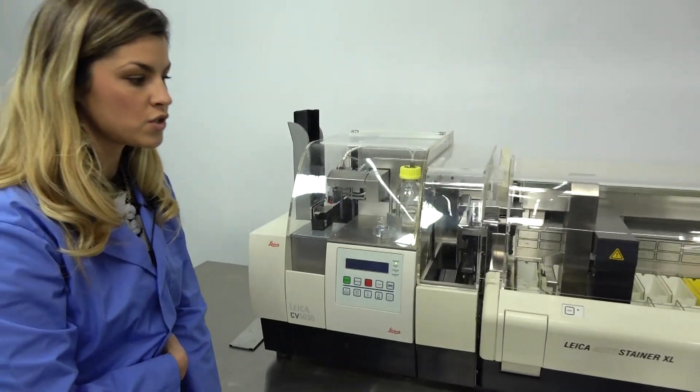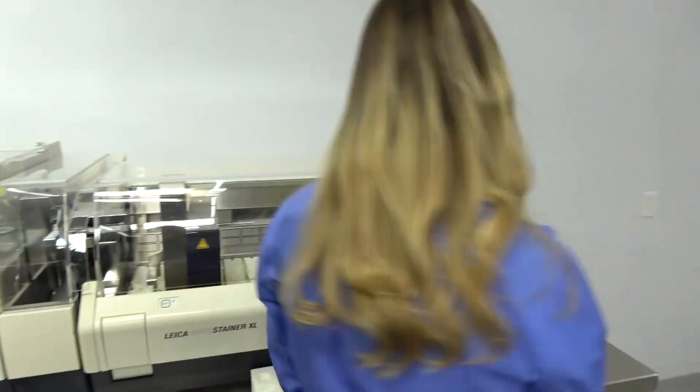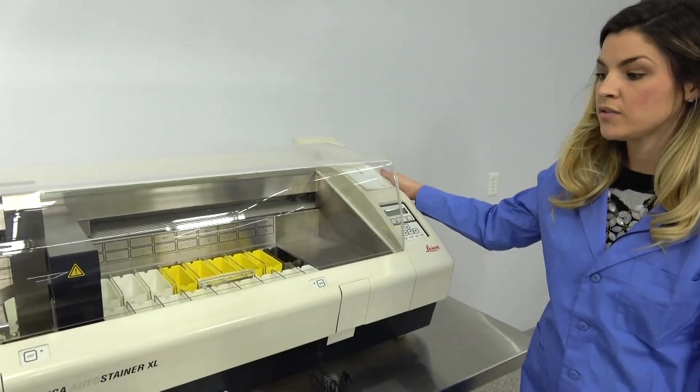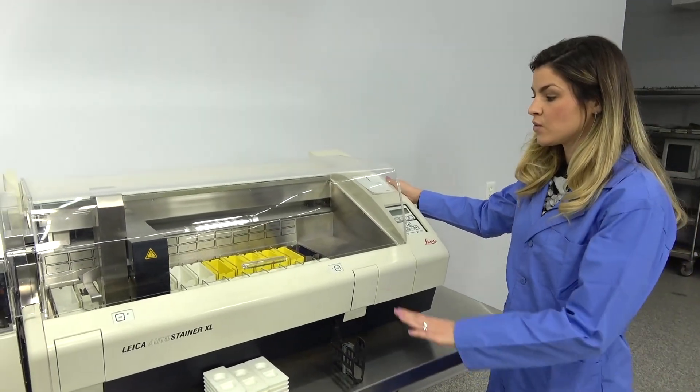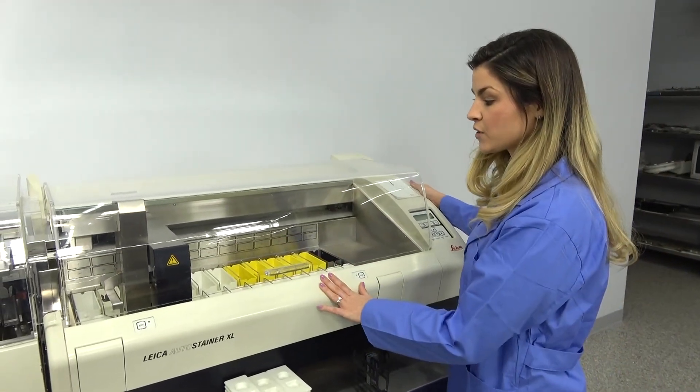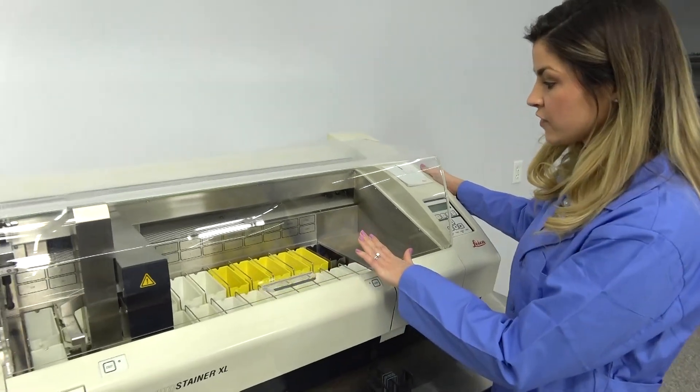Now we're going to move over to the Auto Stainer. This machine will give you the ability to program 15 different programs, and within here is 18 different reagents and five different wash stations.